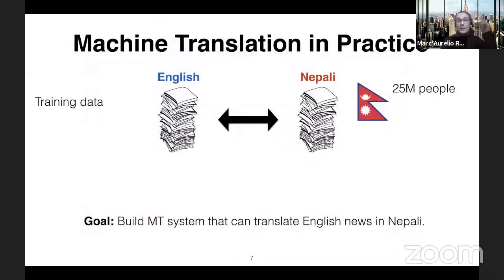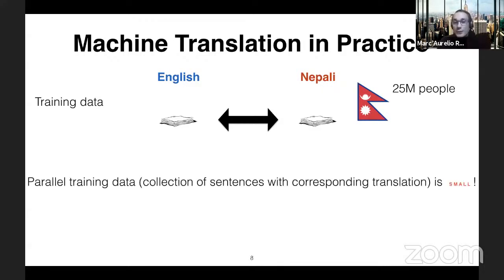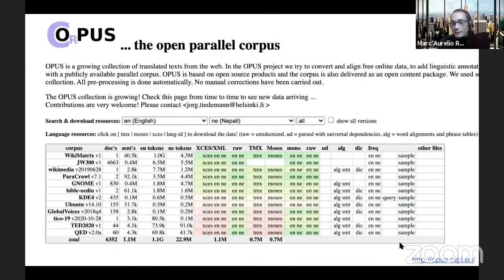Let's go back to our illustration. Instead of considering English-Italian, let's consider English-Nepali. Nepali is the language spoken in Nepal — it's not such a small country, already 25 million people, not counting the Nepali diaspora. We have very few parallel data in practice. If you want to do this exercise for real, you would go to the public repository of all parallel corpora. If you enter English-Nepali, you'll find the publicly available documents.